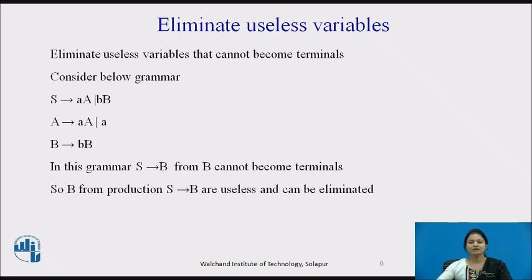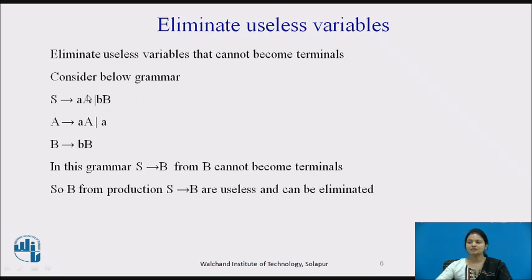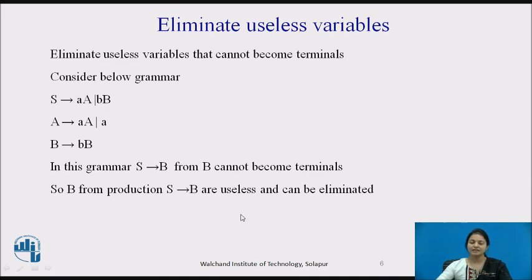First, we will see elimination of useless variables — terminals that cannot become terminals. Consider a grammar where a non-terminal A produced by S is producing a terminal, but non-terminal B is not producing any terminal. In this grammar, S is producing A and B, both non-terminals. A is producing a terminal symbol, but B is not producing any single symbol. So whatever S is producing via B is not going to the terminals. Therefore, B from the production S producing B is useless and can be eliminated.